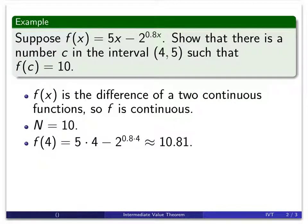So f(4), we plug it in, 5 times 4, minus 2 to the 0.8 times 4, that's 2 to the, what, 3.2. I don't know what that value is exactly, but when we calculate it using a calculator, we get 10.81 approximately. That's one endpoint.